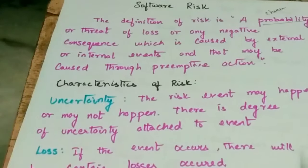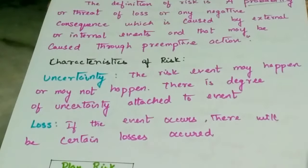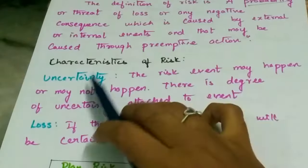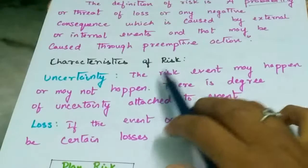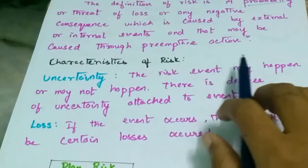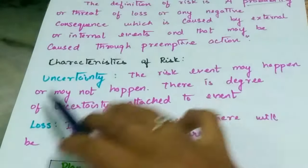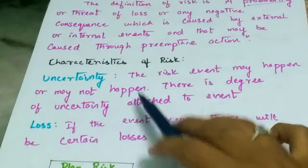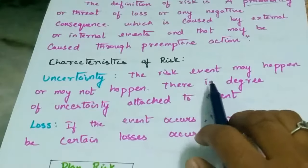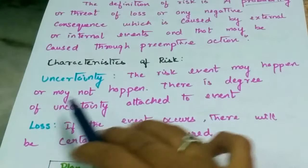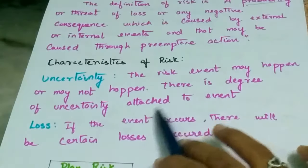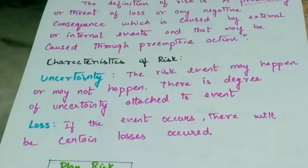Characteristics of risk. First: Uncertainty. The risk event may happen or may not happen. There is a degree of uncertainty attached to every event.